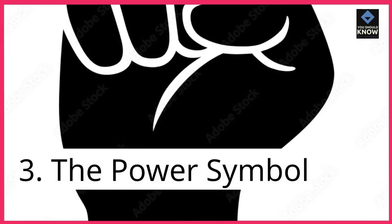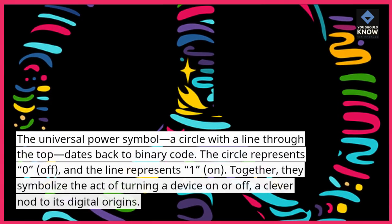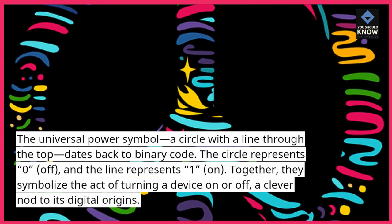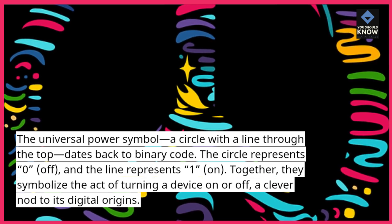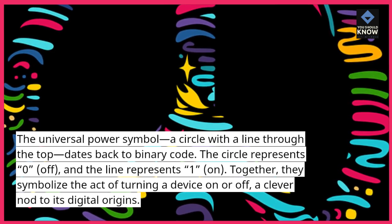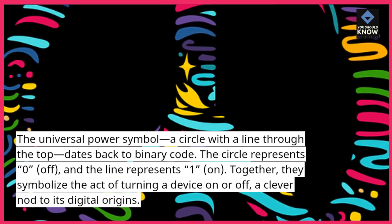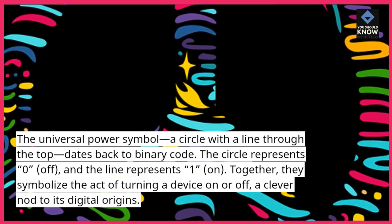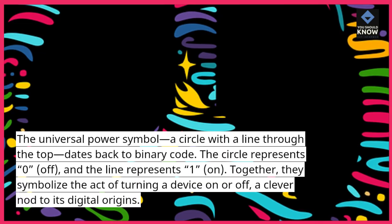3. The power symbol. The universal power symbol — a circle with a line through the top — dates back to binary code. The circle represents 0 (off) and the line represents 1 (on). Together, they symbolize the act of turning a device on or off, a clever nod to its digital origins.